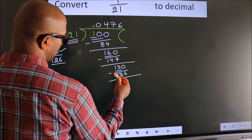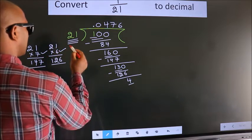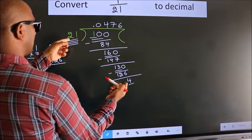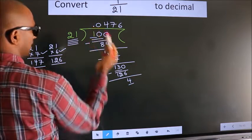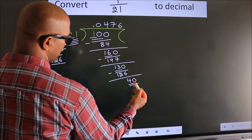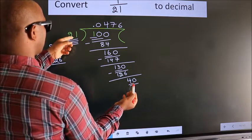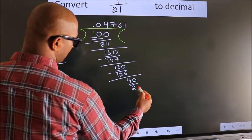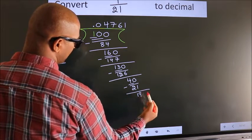Now we subtract and we get 4. Here we have 4, here 21. 4 is smaller than 21, and we already have the decimal, so we can directly take 0 — so 40. A number close to 40 in the 21 table is 21 once, which is 21. Now we subtract and we get 19.